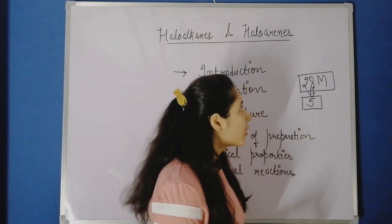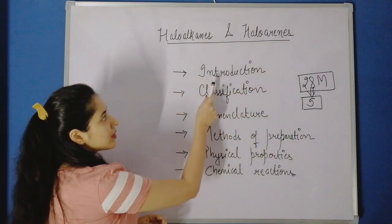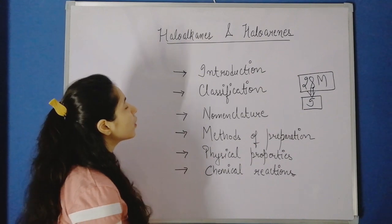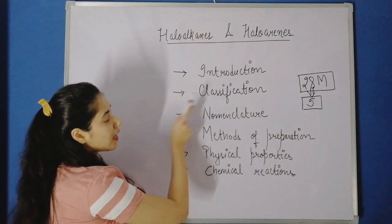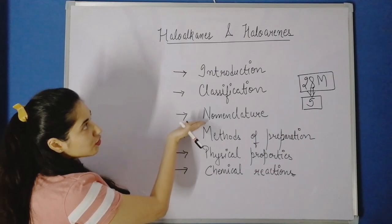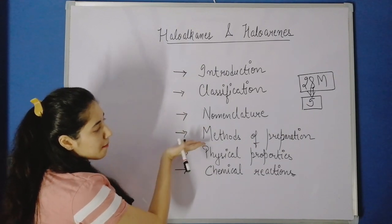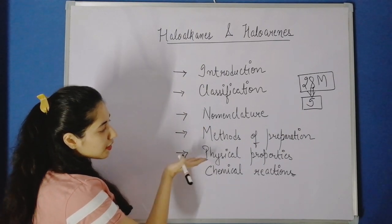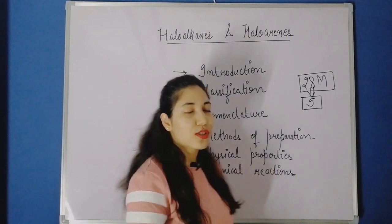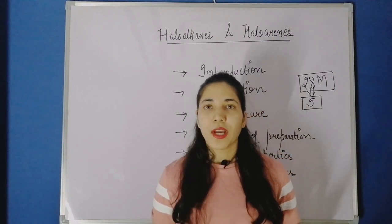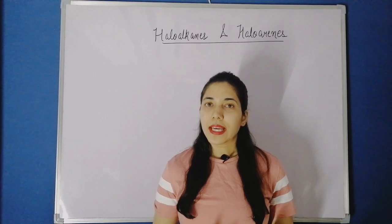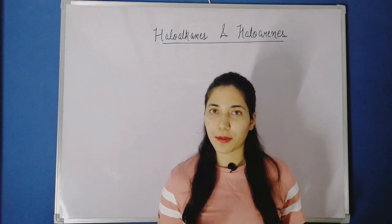Today we start with the first chapter — Haloalkanes and Haloarenes. Let's first see what we need to study in this chapter. We will first look at the basic introduction, then classify haloalkanes and haloarenes, then look at nomenclature of these compounds, methods of preparation, their physical properties, and finally the chemical reactions involved in this chapter.